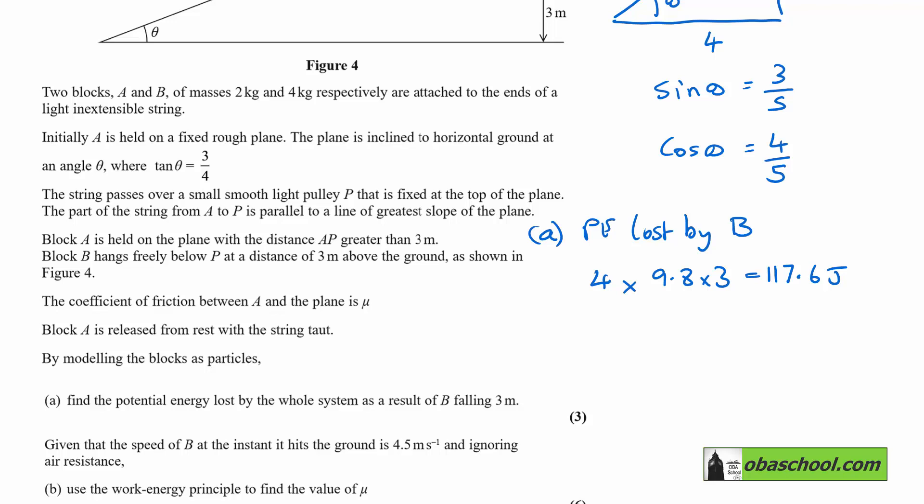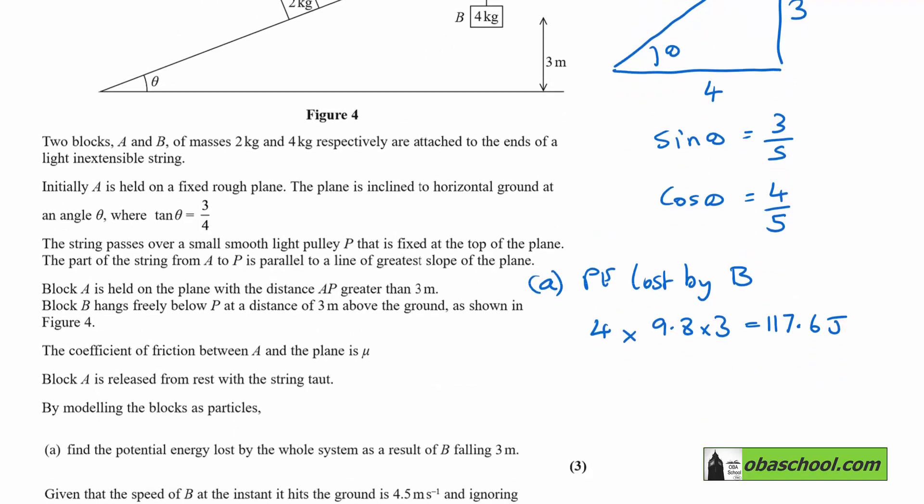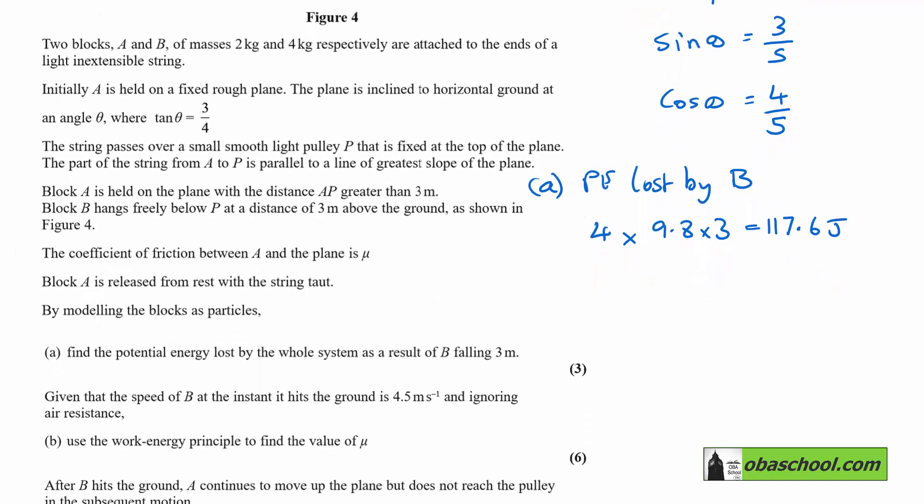Now, we'd like the PE gained by the other particle, the one that's on the plane, that's A. Consider, because we know the string is tight, and B falls 3 meters, that means that A must go 3 meters up the slope.